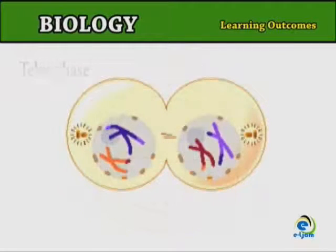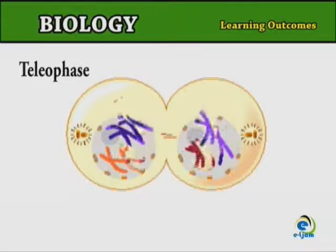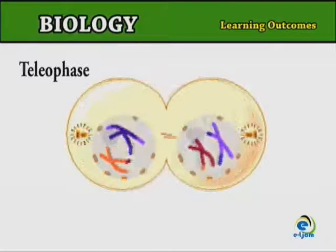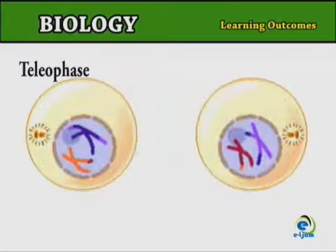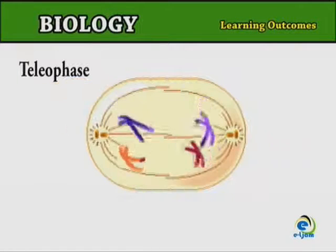The final stage of meiosis I is telophase. During telophase I, nuclear envelopes and nucleoli form around the two new nuclei and the spindle breaks down.